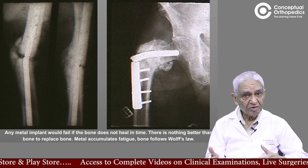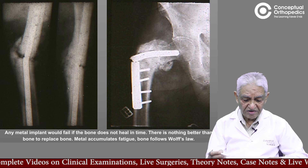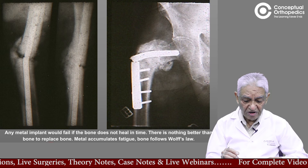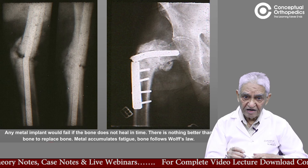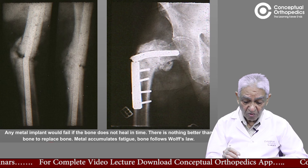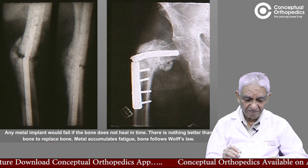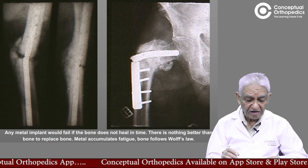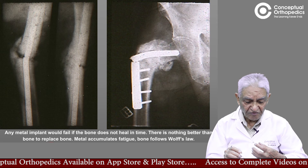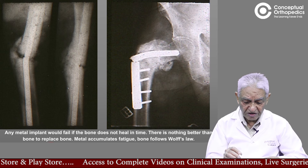Why do we need a bone graft when so many strong metals are available? Because bone is a living structure whereas metal is an inert structure. If a metal is used to stabilize a bone and the bone does not heal in the critical time, the metal will break. When a patient puts load on the metal, it keeps collecting fatigue until it undergoes a spontaneous fracture — that is what is called a fatigue fracture.